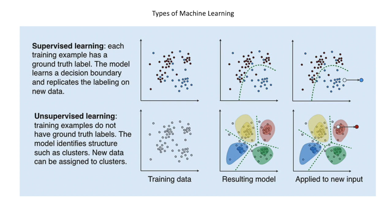Unsupervised machine learning, in contrast, is when we do not have ground truth labels for the training data. Returning to our YouTube analogy, we do not know ahead of time how many different classes of users are using the website. We cannot label these data ahead of time because there is no way of knowing whether there are hundreds or tens of thousands of different types of users. Therefore, we need a way to group these users into clusters with similar viewing habits without knowing ahead of time how many different classes of users there are.